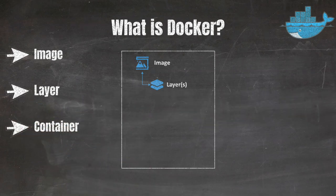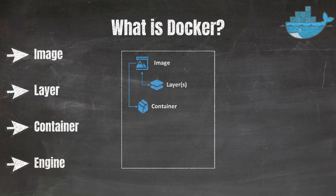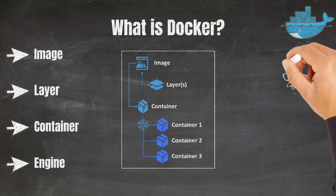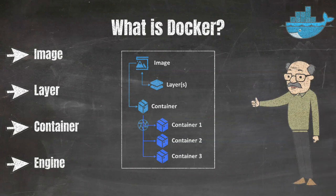Containers are the running instances of Docker images. If an image is a class in object-oriented programming, a container is an object of that class. The Docker Engine is the core software that runs and manages Docker containers on a host system — it allows you to build and run containers, including multiple instances of the same container simultaneously on the same Docker Engine.